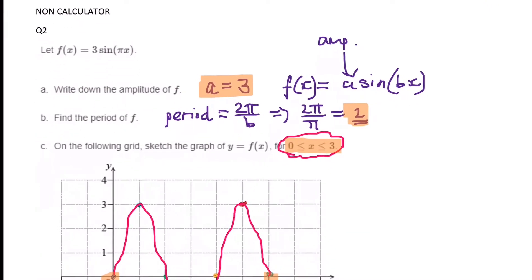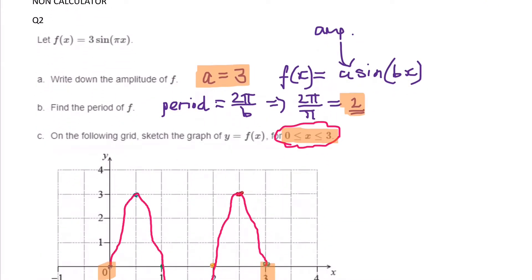On to question 2, which was pretty straightforward. Hopefully everyone's going to get full marks for this. It says a nice easy function: 3 sine, and then brackets pi x close bracket. Right down the amplitude. Well the amplitude is 3. Why? Because the amplitude is the number which is multiplied by the trig function. So in this case it's 3. So I've explained that A is the amplitude here.